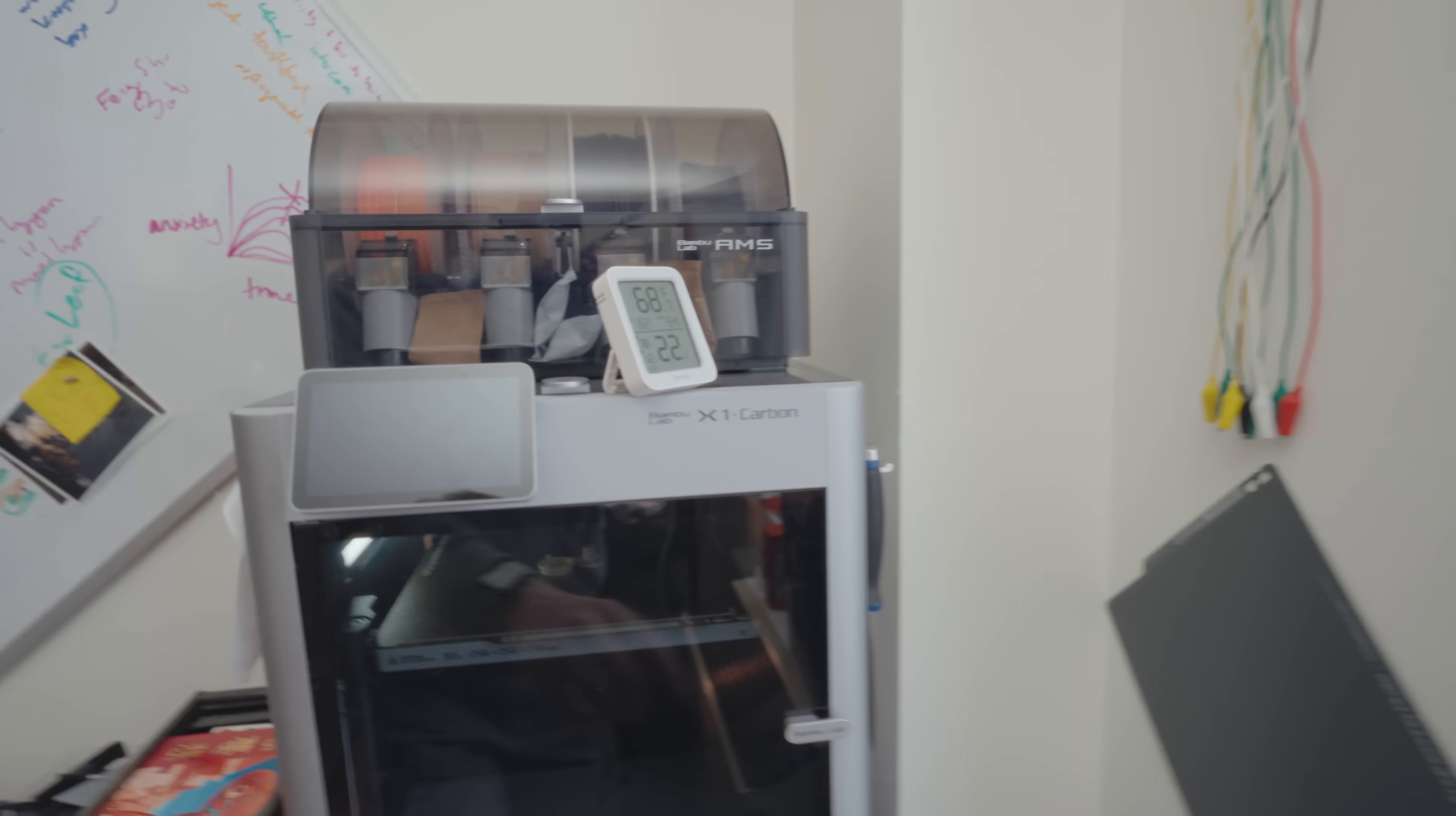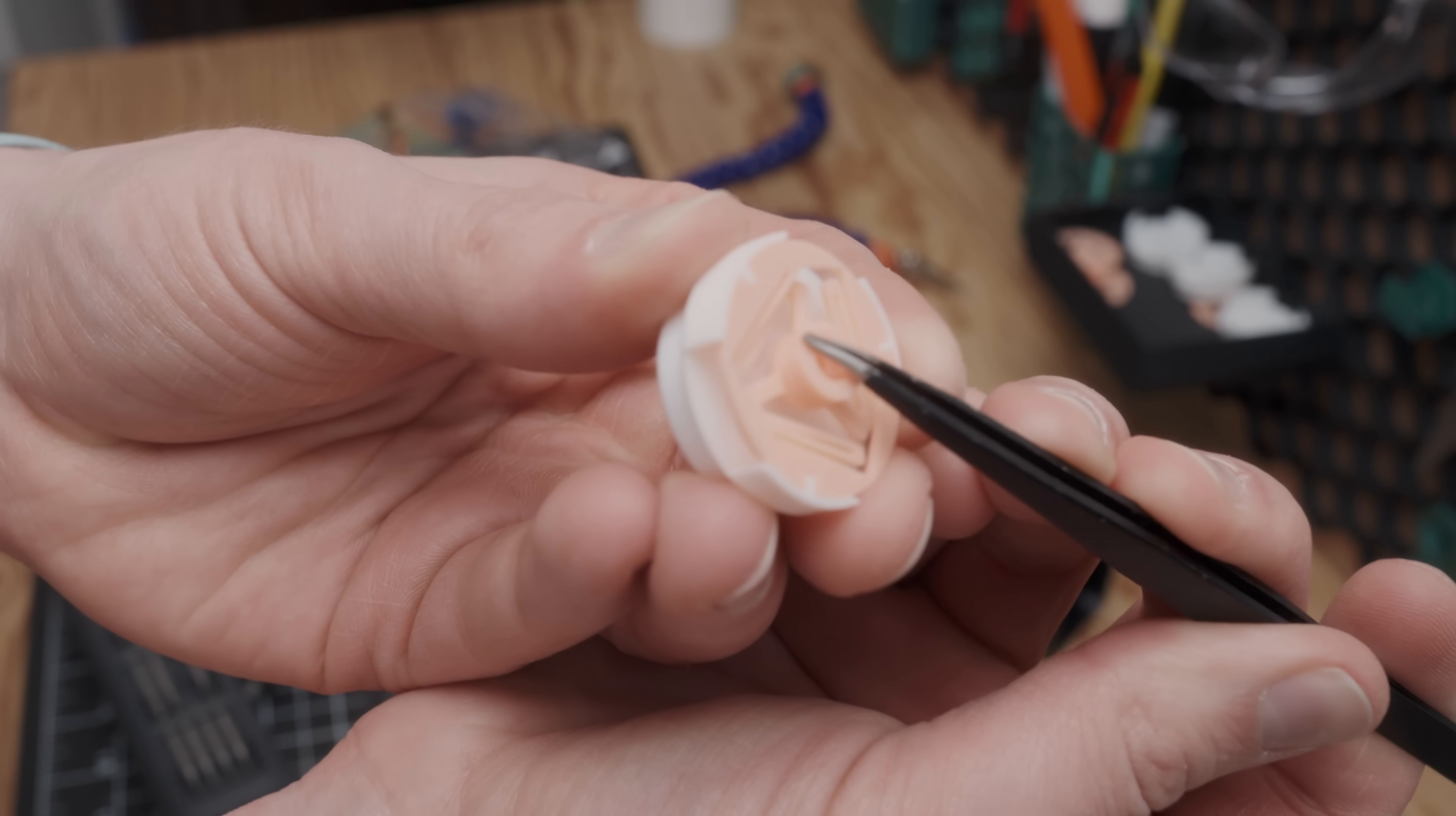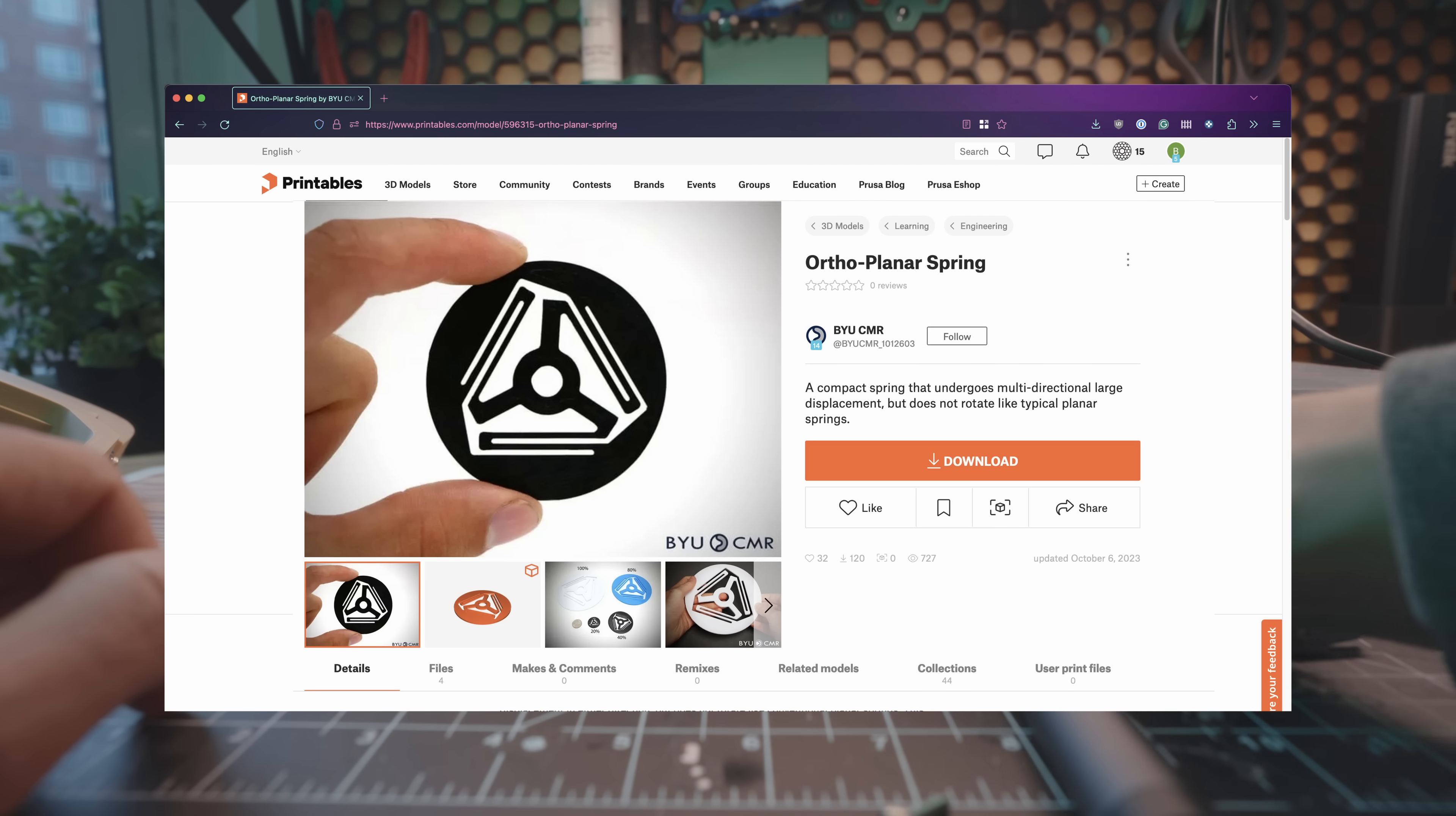This leads me to one of my favorite features of this design, which is this springy thing. This is a 3D-printed ortho-planar spring—ortho meaning the direction of deflection and rotation are at right angles to one another, and spring meaning it goes like this. Now I can't take credit for this super cool spring. The design is by the amazing folks at the BYU Compliant Mechanisms Research Group, and I will link to both their file and website below.